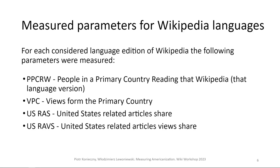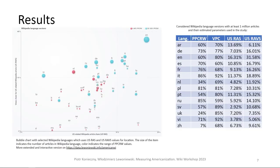We also looked at how many people in a given country are viewing that Wikipedia, and how many articles related to the United States there are and how many views those articles receive. Just looking at article count alone would not be sufficient. For example, Swedish Wikipedia had a bot running that translated a gigantic number of articles about villages — that doesn't mean people really care about those tiny villages, including American ones. So we tried to control for this.